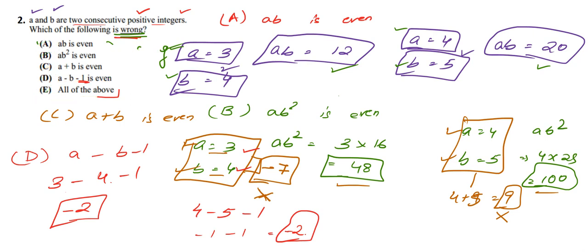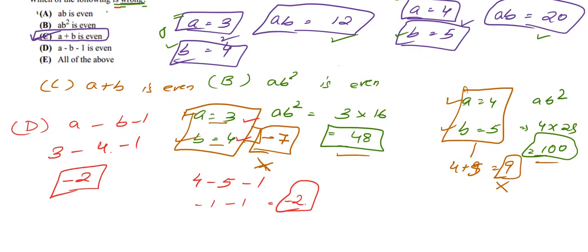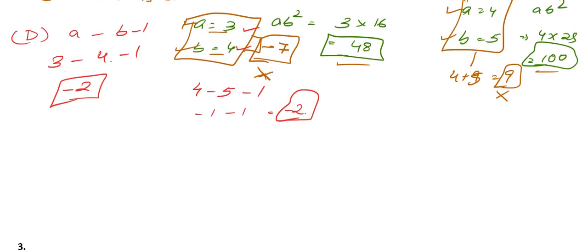Hence we are left with only one statement, which is option C. Option C is a wrong statement, so option C is the correct answer to this question. I will end the video here. You will find solutions to more numericals based on the SAT examination in our further videos.